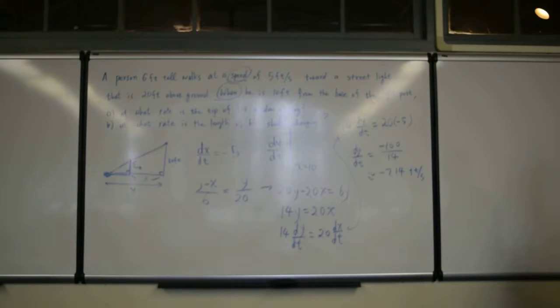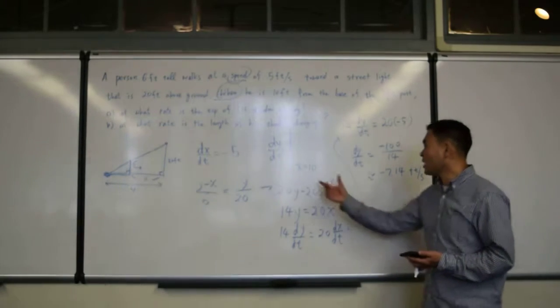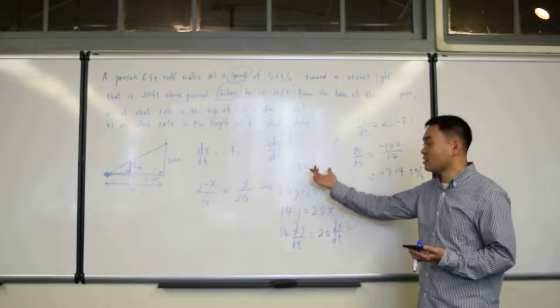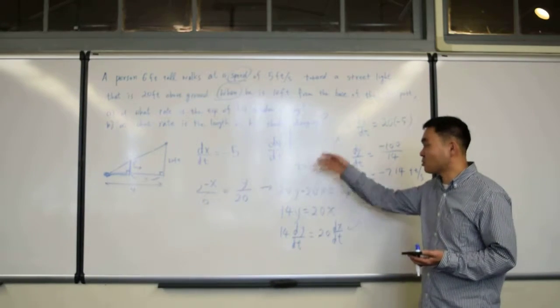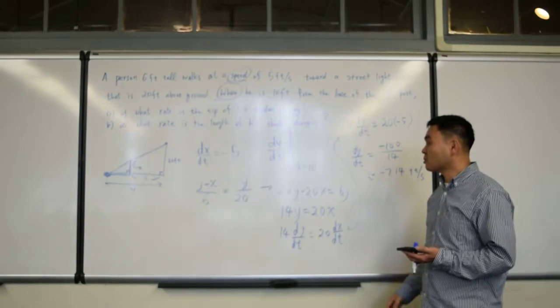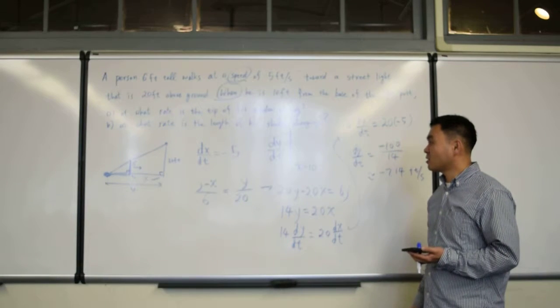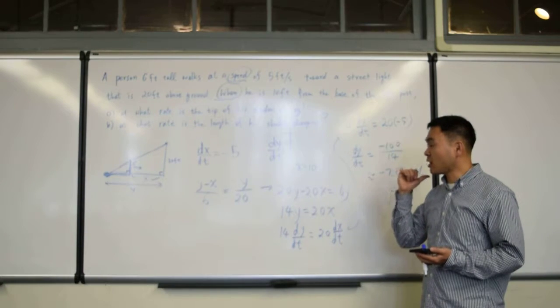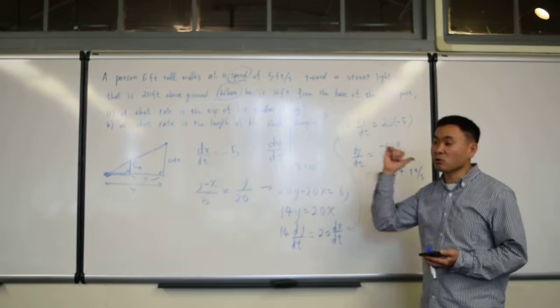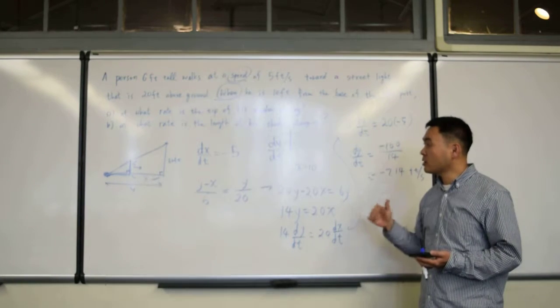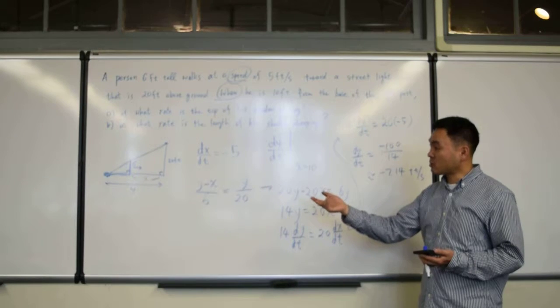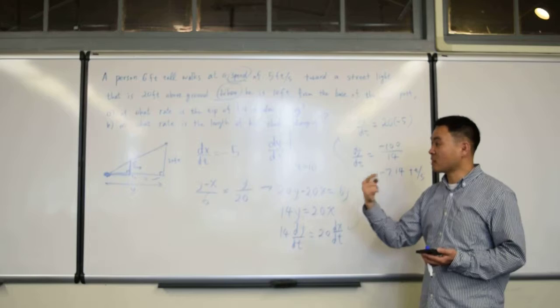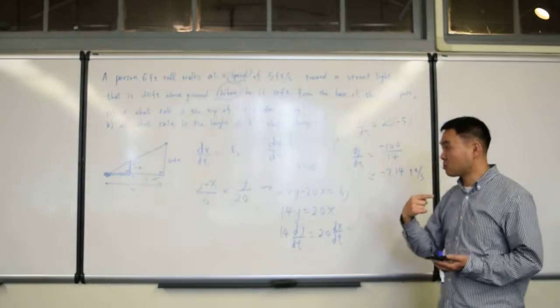Alright, this is a special case where this x equals to 10 wasn't necessary at all. Usually, you need to plug it in, but for this question, this x equals to 10 really didn't matter. So, what it meant was, as it's getting closer and closer to the shadow, closer and closer to the street lamp, the rate at which the shadow is coming in is constant as long as the man is walking towards the street lamp.